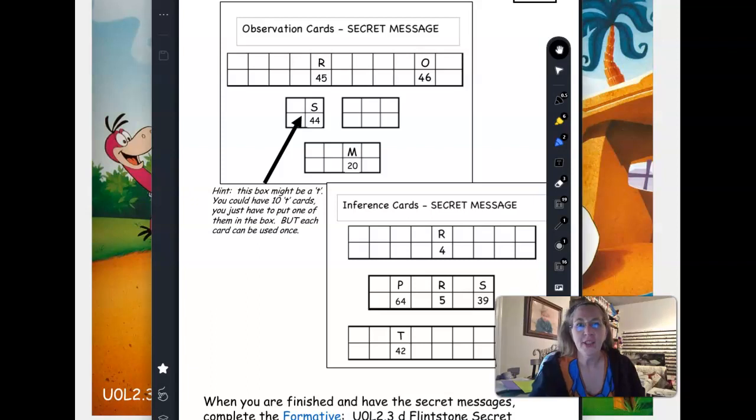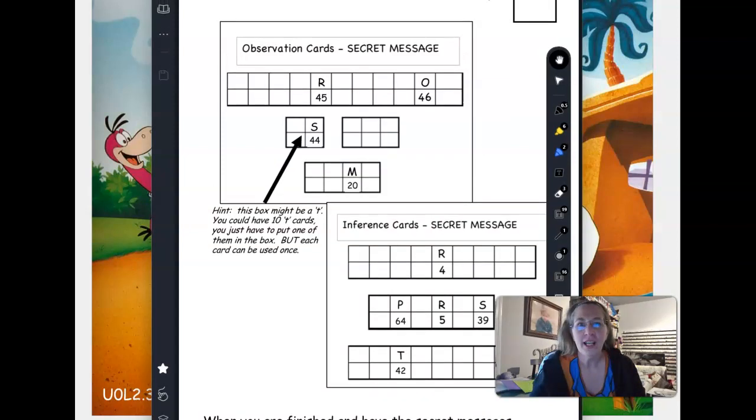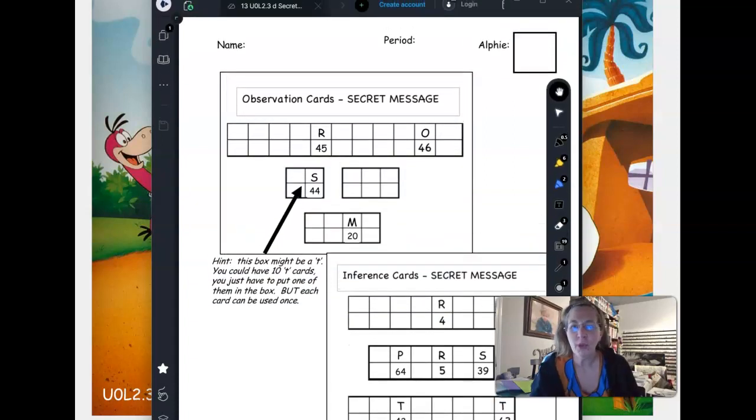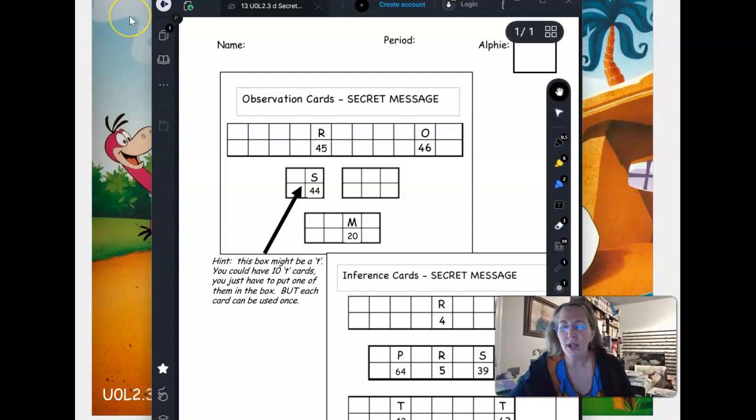This is Unit 0 Lesson 2.3e, and this is the Aspire video. Your worksheet is number 13 in your Unit 0 packet. What you're going to do for this is solve a secret message for both observations and inferences.